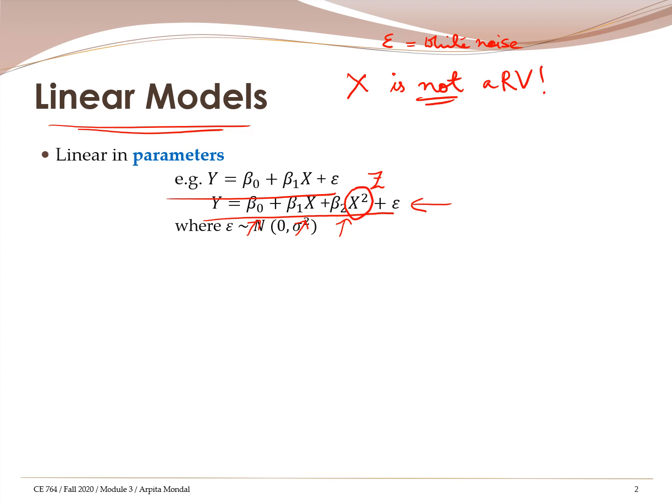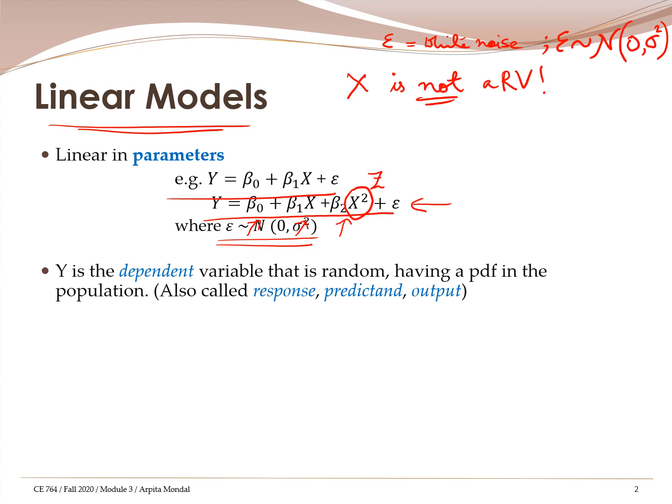Epsilon here is a noise term — white noise. Epsilon belongs to the normal distribution with mean 0 and some variance sigma-squared. The noise always has a mean equal to 0 because noise represents an error in your model, and some of the errors are additive. When you take the sum of all the errors they tend to be 0, and therefore the noise term belongs to a normal distribution with mean 0 and variance sigma-squared.